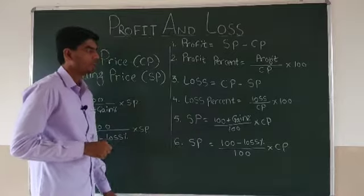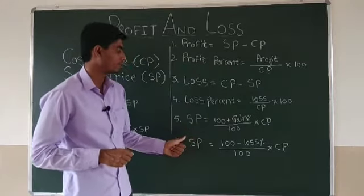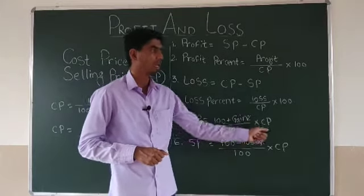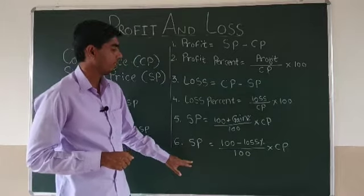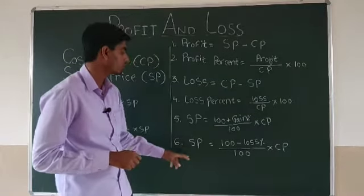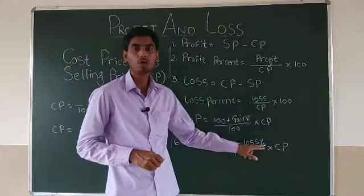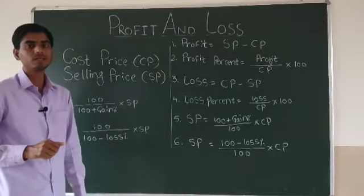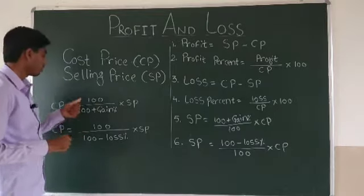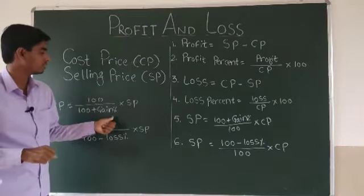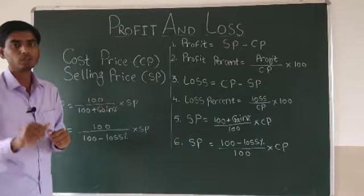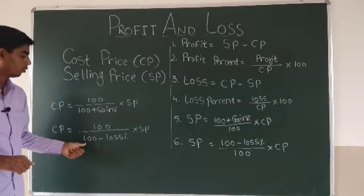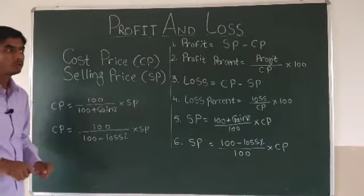To find selling price when profit is given: write (100 + gain%) over 100, multiply by cost price. If loss is given: write (100 - loss%) over 100, multiply by cost price. To find cost price when profit is given: write 100 over (100 + gain%) into selling price. If loss is given: write 100 over (100 - loss%) into selling price.